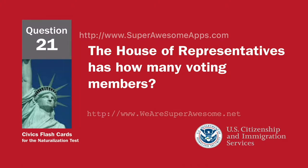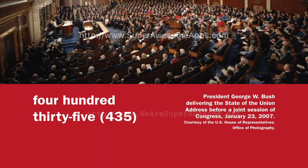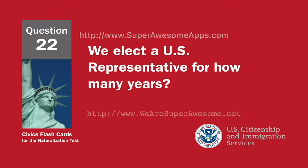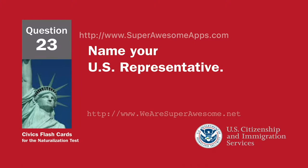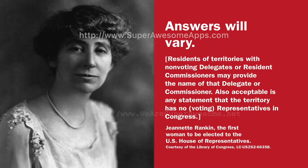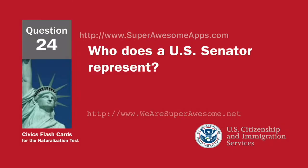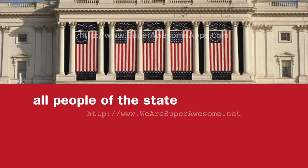The House of Representatives has how many voting members? Four hundred and thirty-five. We elect a U.S. Representative for how many years? Two. Name your U.S. Representative. Who does a U.S. Senator represent? All people of the state.